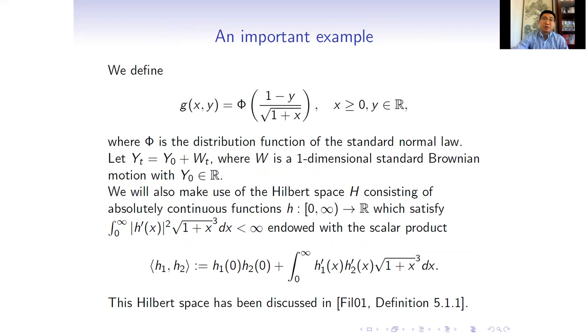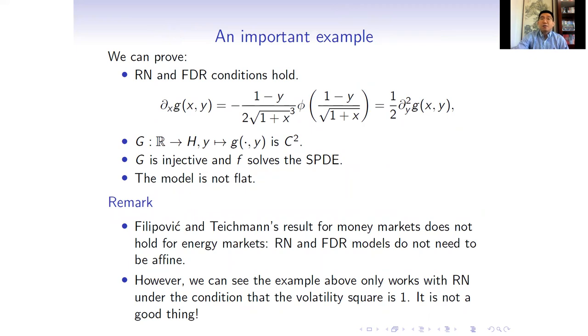After this famous result, we present an easy but important one-dimensional example as follows. The curve is defined in this way, and we discuss it in a Hilbert space equipped with a scalar product as this, which has been discussed in Filipovic's book. We can prove that RN and FDR conditions hold, while the curve is not affine. Moreover, we embed the manifold into a Hilbert space and show that the constructed process is a solution to the SPDE. We present an example with a one-dimensional manifold, which is not flat.